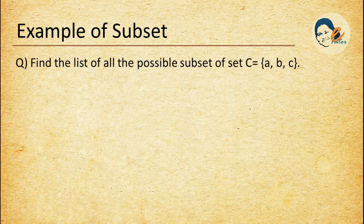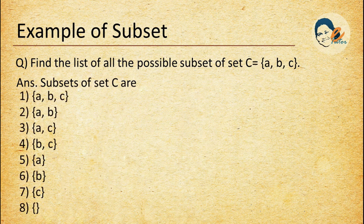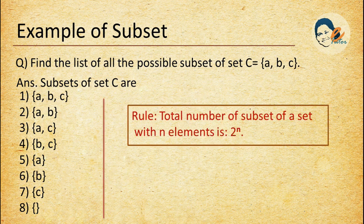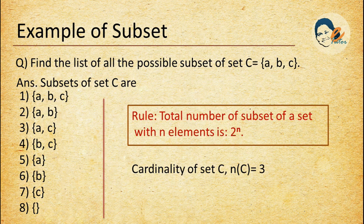Example of subset: find all possible subsets of set C that contains elements {A, B, C}. The subsets of set C are: first, {A, B, C} — a set with 3 elements; then three sets with 2 elements each; then three sets with 1 element each; and finally the empty set, which is also a subset of set C. So set C has 8 different subsets. The general rule is: the total number of subsets of a set with n elements is 2 to the power n. Here cardinality of set C is 3, so the number of subsets is 2³ = 8.